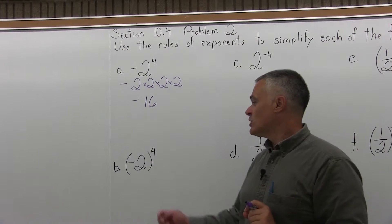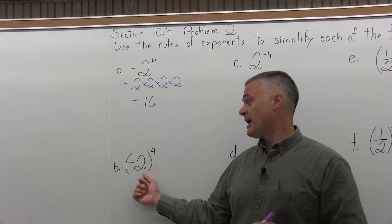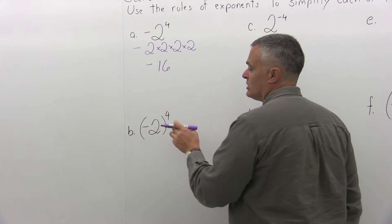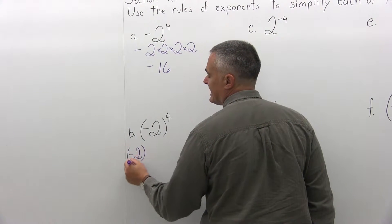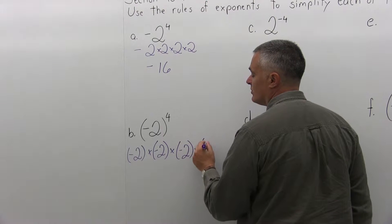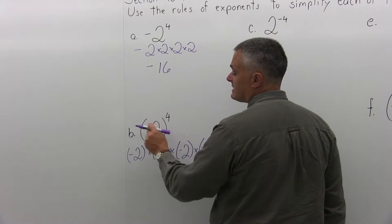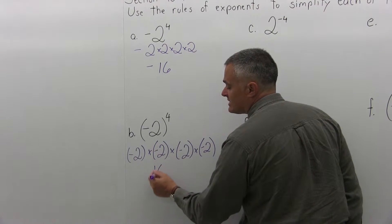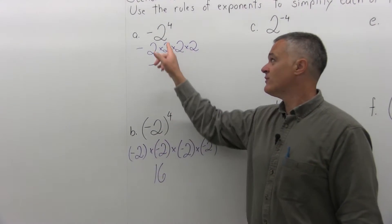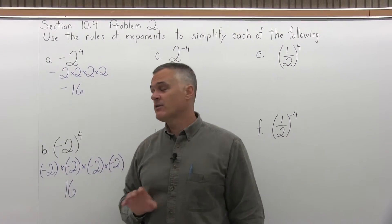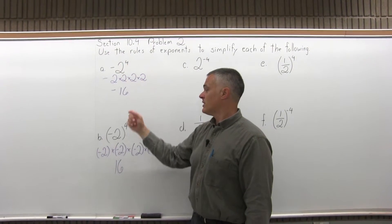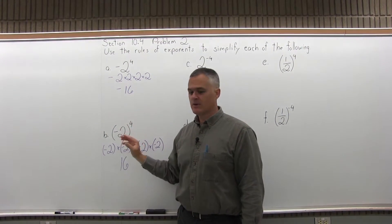Part B looks very similar: you have negative 2 in parentheses to the fourth power. There's a big difference because now that fourth power is affecting the negative and not only the 2. So negative 2 times itself 4 times: negative 2 times negative 2 times negative 2 times negative 2. The 2s multiply to 16, and the even number of negatives cancel out, so the answer for Part B is positive 16, as opposed to Part A which was negative 16. Without the parentheses, only the value next to the exponent is affected. With the parentheses, both are affected — that's a key difference and a very common mistake.